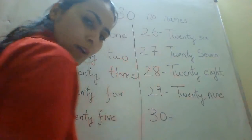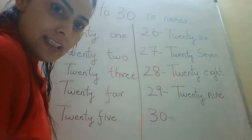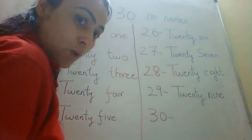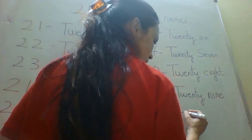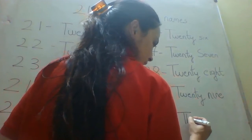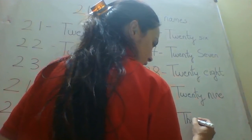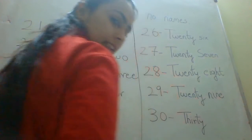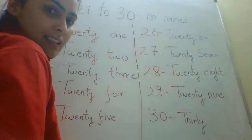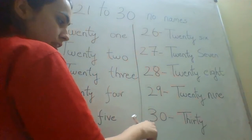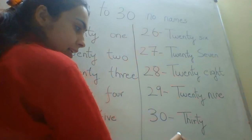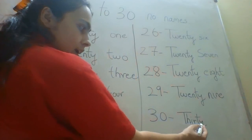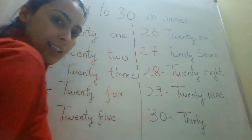Then we have 30. So one more new spelling you have to learn is 30. The spelling of 30 is T-H-I-R-T-Y. So 30 is T-H-I-R-T-Y.